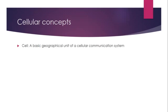A cell is defined as a basic geographical unit of a cellular communication system. All cells must be symmetrical in shape. We have four geometrical shapes: circle, square, equilateral triangle, and hexagon. If we select a circle, the area between two circles will not get covered by the base station, and any communication from that area will fail. Thus, we eliminate the circular shape. Hexagon has the highest area compared to other shapes, so we divide the geographical area into hexagonal cells.